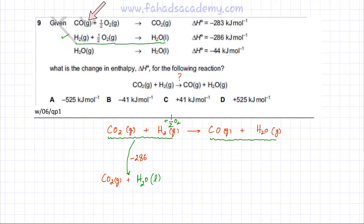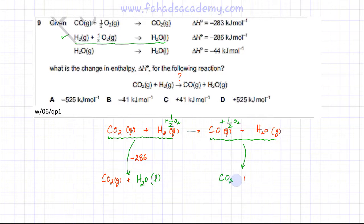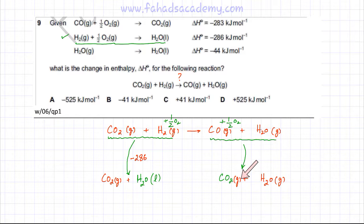Now using the first reaction: CO + ½O₂ → CO₂. Since CO is present in the reactants, ½O₂ is added and CO reacts with it to produce CO₂ gas. H₂O is not involved in this step, so it carries through unchanged. The enthalpy change for this step — CO being converted to CO₂ — is minus 283 kilojoules per mole.